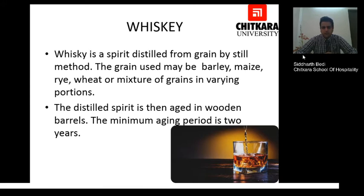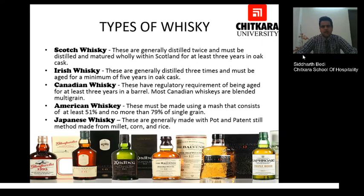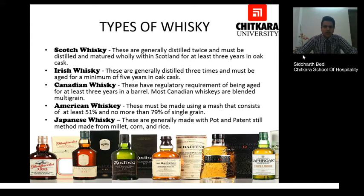The types of whisky include Scotch whisky, which is generally distilled twice and must be distilled and matured only within Scotland for at least three years in oak casks. Irish whisky is generally distilled three times and must be aged for a minimum of five years in oak casks. Canadian whisky has the requirement of being aged for at least three years, and most Canadian whiskies are blended from various multigrain mashes. American whisky may use a mash consisting of various grains, with a single grain proportion of 51 to no more than 79 percent. Japanese whisky is made with both the pot still and patent still methods, using millet, corn and rice.